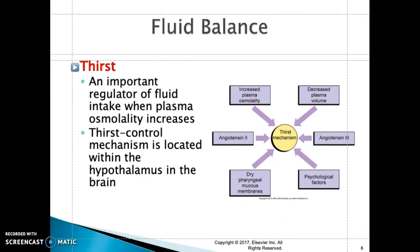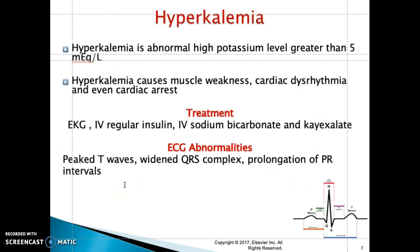Thirst is regulated by the hypothalamus. The very young and the very elderly are more at risk for dehydration. Some elderly patients may have cognitive impairments such as Alzheimer's or dementia and may not be able to remember that they are thirsty, placing them at greater risk for dehydration.